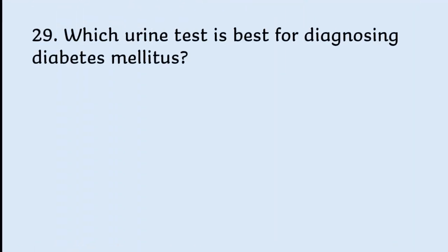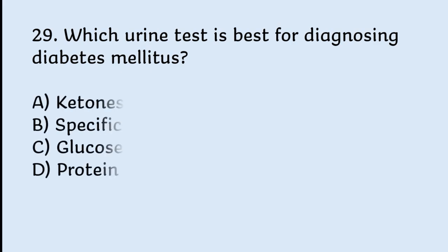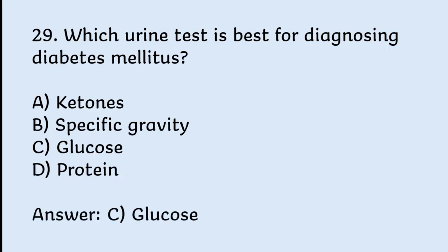Which urine test is best for diagnosing diabetes mellitus? Options: ketones, specific gravity, glucose, protein. Correct answer is glucose.